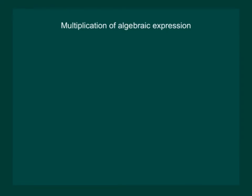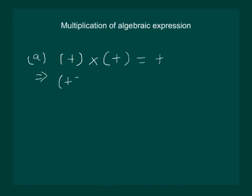Rule A: If we multiply two positive numbers, then we will get the product to be a positive number. This implies, if we multiply plus 2 multiplied by plus 5, the answer will be plus 10.